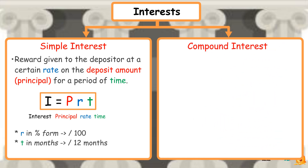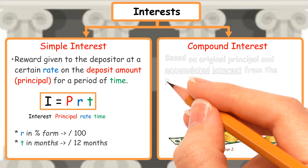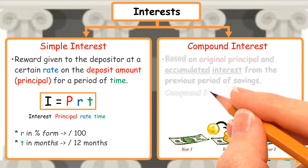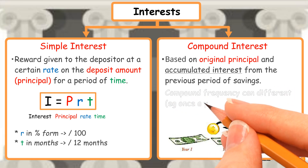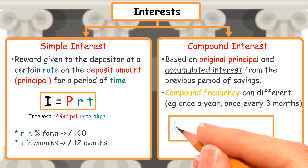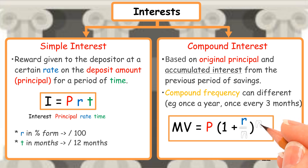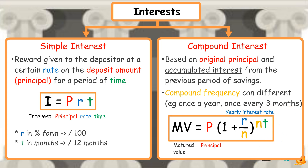Compound interest is calculated based on the original principal and also the accumulated interest from the previous period of savings. The frequency of compounding on the principal can be different, for example once a year or once every 3 months. The formula is MV equals P times (1 plus R over N) to the power of NT, where MV is matured value, P is principal, R is yearly interest rate, N is number of periods the interest is compounded per year, and T is term in years.